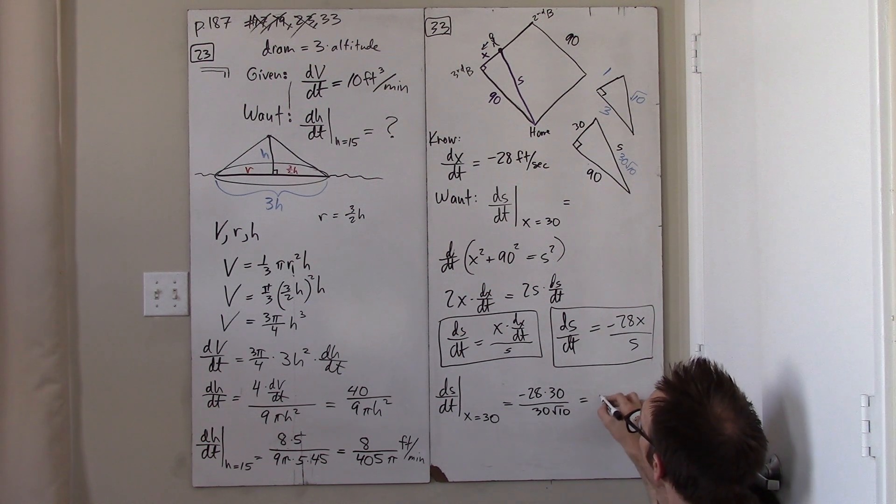And so, the answer to this problem is just negative 28 over root 10, in my opinion. We can just leave things like that now, feet per second.